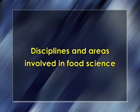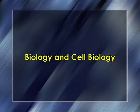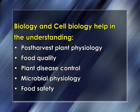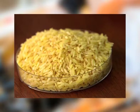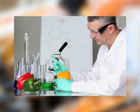Now, the disciplines and areas involved in food science. As food science involves the applications of various basic and allied sciences, it is pertinent to understand how these frame their utility in food science. Biology and cell biology help in understanding post-harvest plant physiology, food quality, plant disease control and microbial physiology as well as food safety. Biotechnology has enabled production of rice with increased content of beta-carotene and enzymes for cheese making and bread making. Chemistry assists food analysis, improvement in food quality, extending shelf life and development of functional foods.